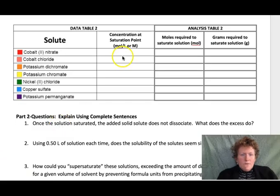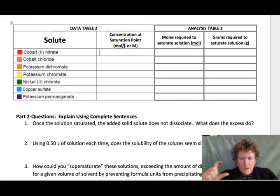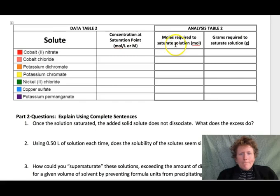So here's our first data table. We can write down the concentration at the saturation point. That you'll get from the little meter in the simulation. Moles required to saturate solution—that's divided by 0.5 since you're using 0.5 liters. Use the concentration on the little purple meter and divide it by 0.5. And then grams required to saturate the solution—just convert your moles to grams using the periodic table and the formula for cobalt nitrate.